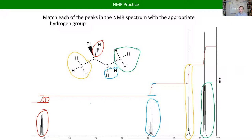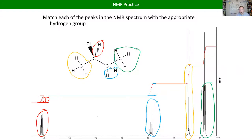If you have two substituents on a benzene ring, you can actually look at the pattern in the aromatic region to tell whether they're ortho, meta, or para to each other. We'll get there. For now, we're going to get comfortable with smaller molecules, and I'll keep doing practice and let you guys try things first before I show you the answers.